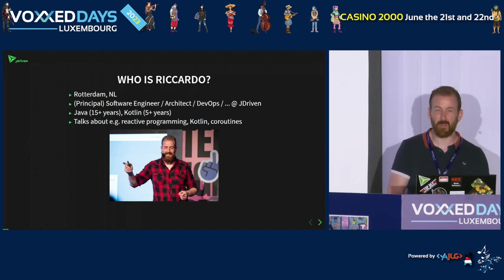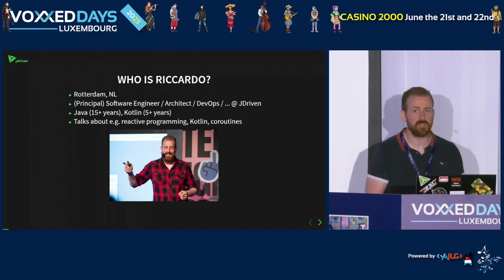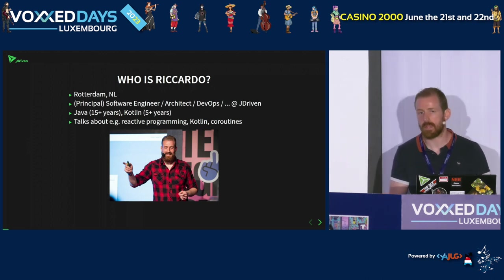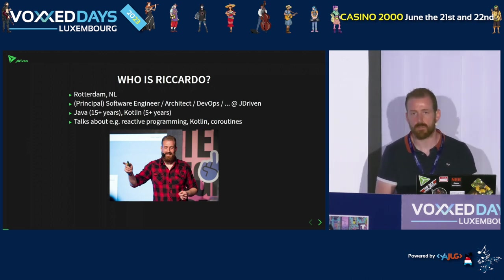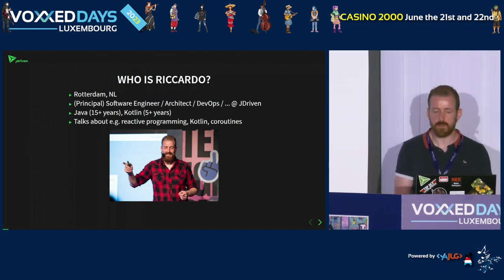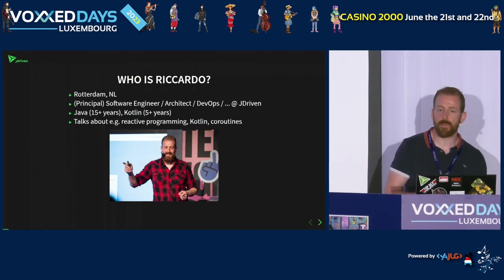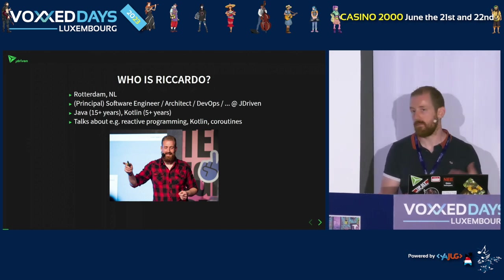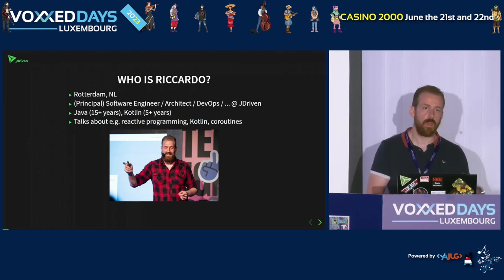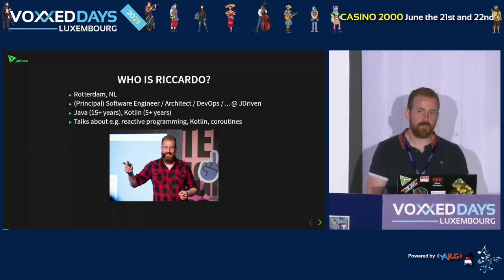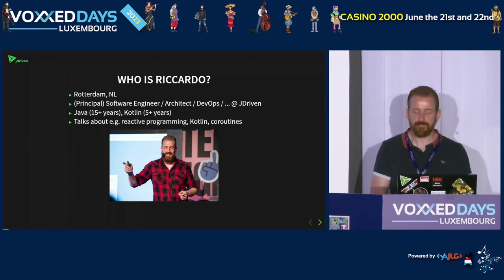I've been doing Java for more than 15 years now, and in the last five years also focused on Kotlin. I've already done some talks about reactive programming in the past, about Kotlin, also coroutines. So virtual threads was basically the logical next step.